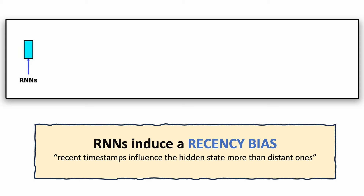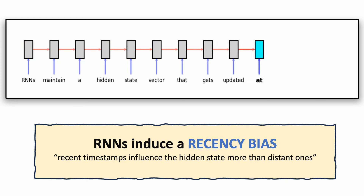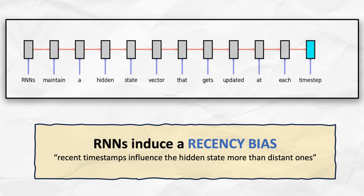Let's take another example: RNNs, which are designed to sequentially process time series data like text. RNNs maintain a hidden state vector that gets updated at each time step as new items in the sequence are inputted. Because of this, the hidden state develops a close association with very recent input time steps compared to the distant past. RNNs therefore also impose an inductive bias that recent time steps are more important than past ones.